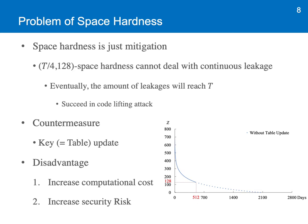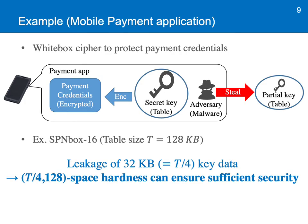So what can we do about it? Well, as a countermeasure, it is natural to think that we update the secret key or the table in this context. However, this countermeasure would come with two disadvantages. I will talk about these disadvantages in more detail by taking a mobile payment application as an example. Mobile payment application is a typical application in which white box cryptography is applicable. In this context, a white box cipher is used to protect payment credentials by encrypting them. In this example, let's say SPN box 16, whose table size is 128 kilobytes, is used to protect them.